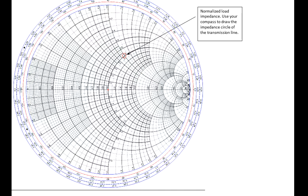Now that we know where our load impedance is positioned on the Smith chart, we draw what's called an impedance circle of the transmission line. This impedance circle can be drawn with a compass — you simply take your two points from the center to the load and draw the circle. Anywhere on that circle will be a different impedance value. Because the transmission line is not matched, you'll have variations of impedance along the line over an angular range of 180 degrees.